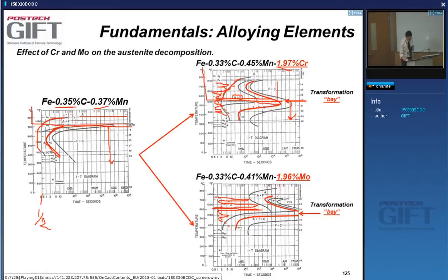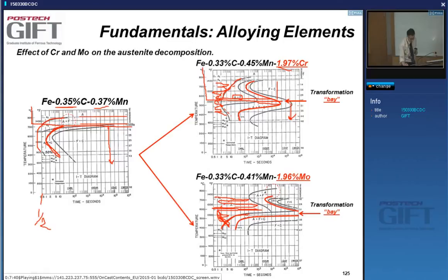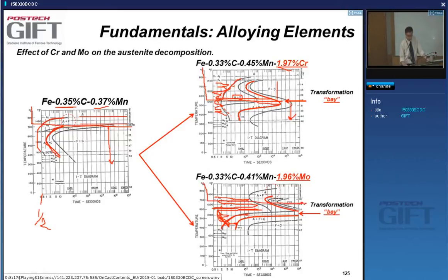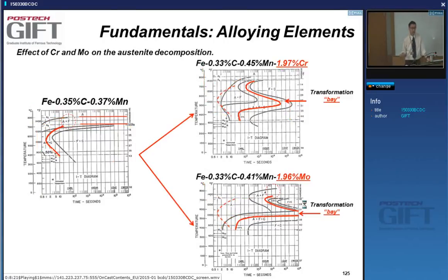The bainite transformation, at the same temperature, isn't influenced very much — it goes from about 2–3 seconds to 20 seconds, so it's slower but not dramatically so. You can clearly see that the bainite transformation will be preferred by molybdenum additions. Of course, if you do an isothermal transformation in the ferrite/pearlite region, you won't get any bainite anyway.